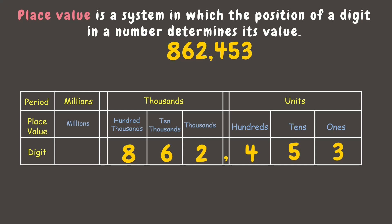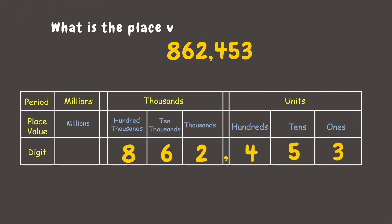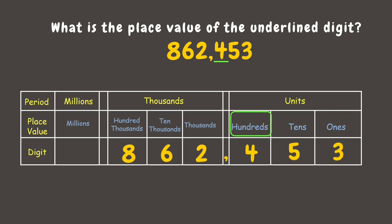Remember, each period must be separated by a comma. Now let's identify the place value of each underlined digit. Five — five is in the tens place. How about two? It is in the thousands place. What place is three? It is in the ones place. What about four? It is in the hundreds place.